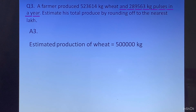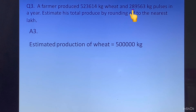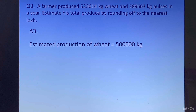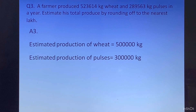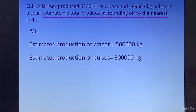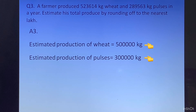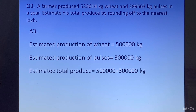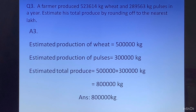The second piece of information is that 289563 kg of pulses were produced in a year. For the estimated amount, we look at the 10,000 place, which is occupied by 8. Since 8 is greater than 5, we will increase the digit at the lakhs place by 1 — so 2 will become 3. The estimated production of pulses is equal to 3 lakh kg. For total produce, we add the two estimated amounts: 5 lakhs plus 3 lakhs equals 8 lakh kg. The answer is 800000 kg.